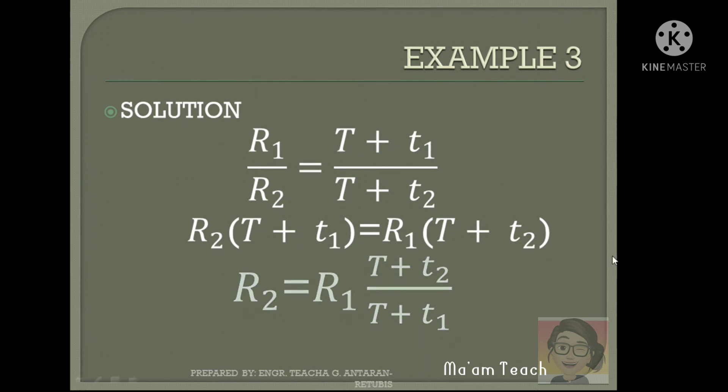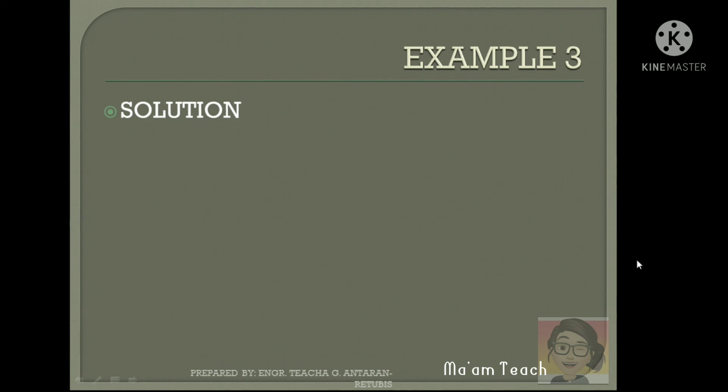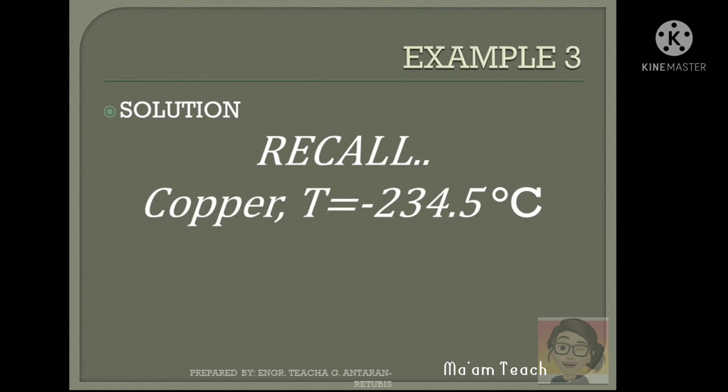If you recall, this big letter T refers to the inferred absolute value. The value of the inferred absolute temperature for copper is negative 234.5 degrees Celsius.